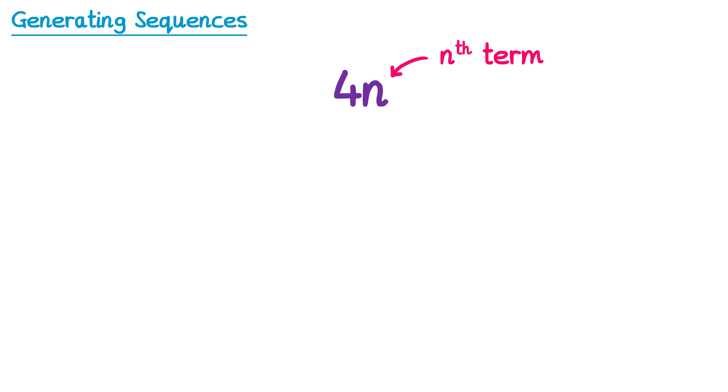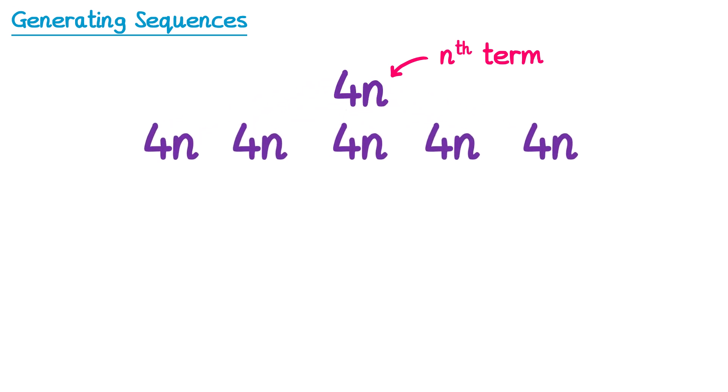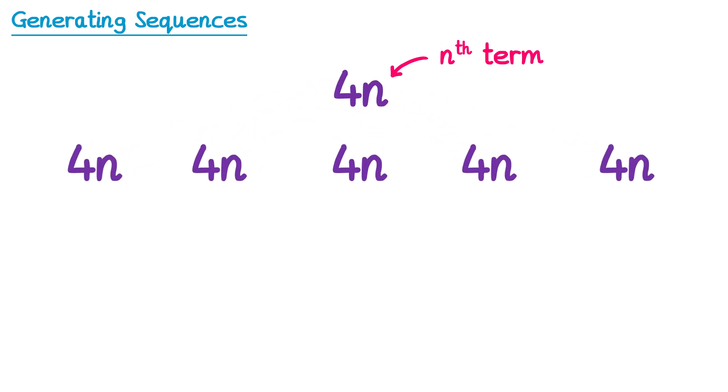Let's generate the first 5 terms of this sequence with nth term 4n. To do that we'll take several copies of the nth term and we'll substitute n for 1, 2, 3, 4 and 5. So if we substitute n for 1 we have 4 times 1 which is 4, so the first term must be 4.